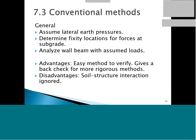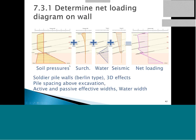Looking at conventional methods: we assume lateral pressures, determine fixed locations for forces at the subgrade or beneath the excavation, and analyze the wall beam with assumed loads. The advantage is that the method is easy to verify and gives a back-check for more rigorous methods. The disadvantage is that we're not including soil-structure interaction and totally ignoring the staged construction process. We determine the net loading diagram on the wall by assuming lateral earth pressures, calculating surcharges, net water pressures — from a flow net or 1D flow analysis — and possibly adding seismic loads.